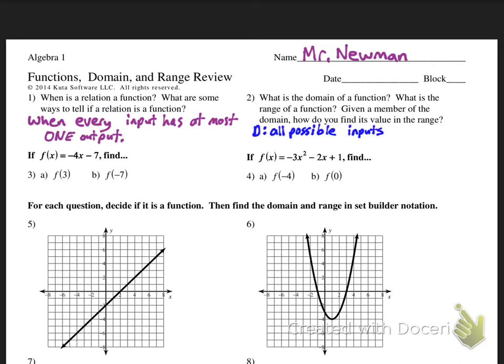When every input has at most one output, what is the domain of a function? That is all possible inputs. The range are all possible outputs. And if you have some members of the domain, or given a member of the domain, how do you find its value in the range? Well, you just plug it in, plug it into the function.